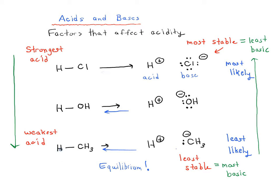At the bottom here, we have methane. It's a very weak acid, and it's going to give us a very unstable conjugate base. A different way of looking at stability of your conjugate base is if you think of stability as the opposite of basicity. So the more stable something is, the less basic it is, and the less stable it is, the more basic it is.